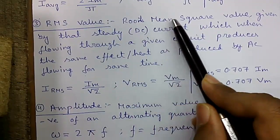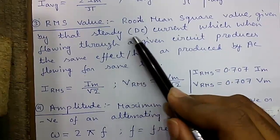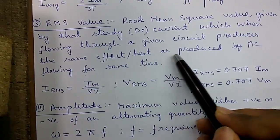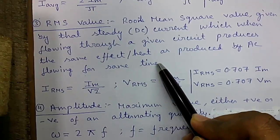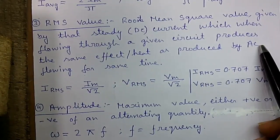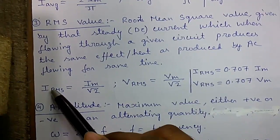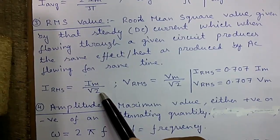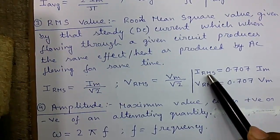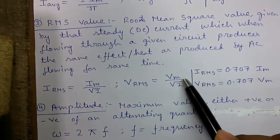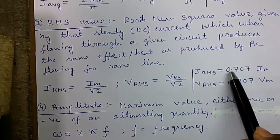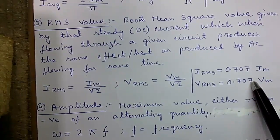The RMS value also called the root mean square value. The definition is given by that steady or DC current which when flowing through a given circuit produces the same effect or same heat as produced by the AC flowing for the same time. IRMS equals Im by root 2 where Im is the maximum current. Similarly VRMS equals Vm by root 2 where Vm is the maximum voltage. If you divide 1 by root 2 that becomes 0.707. So IRMS is 0.707 Im and VRMS is 0.707 Vm.